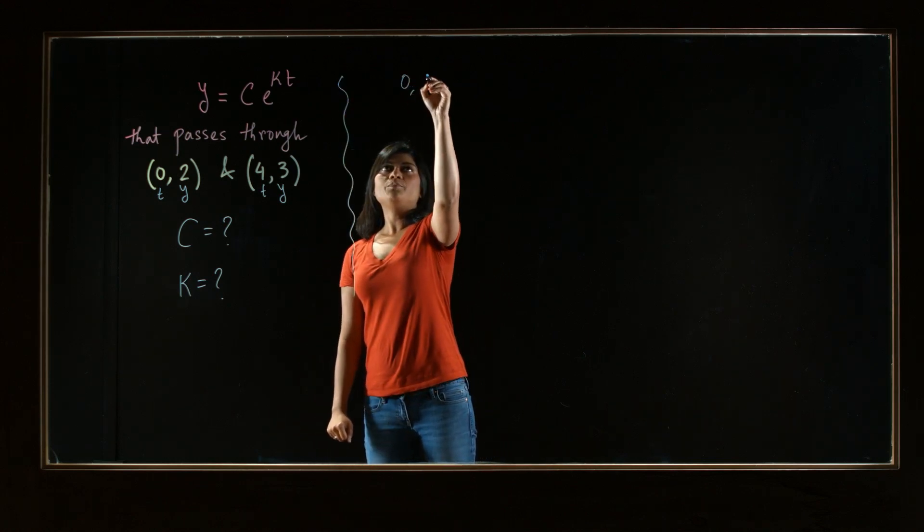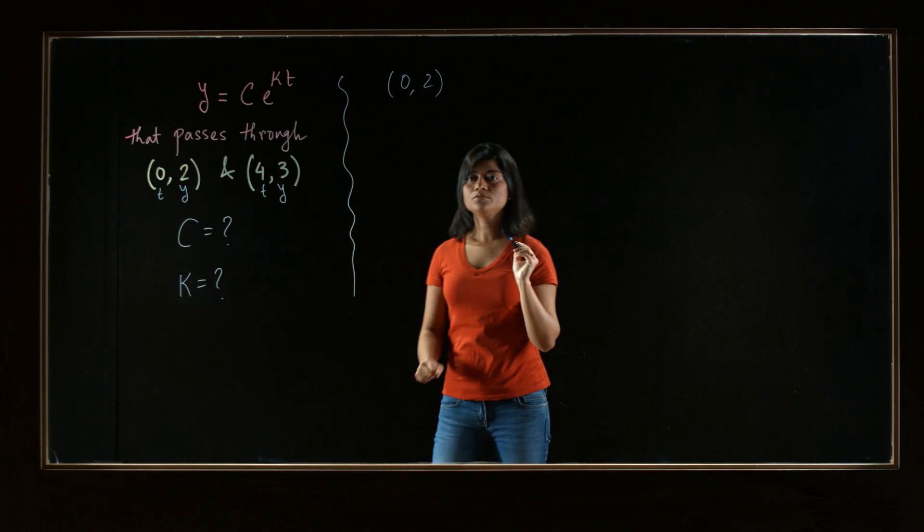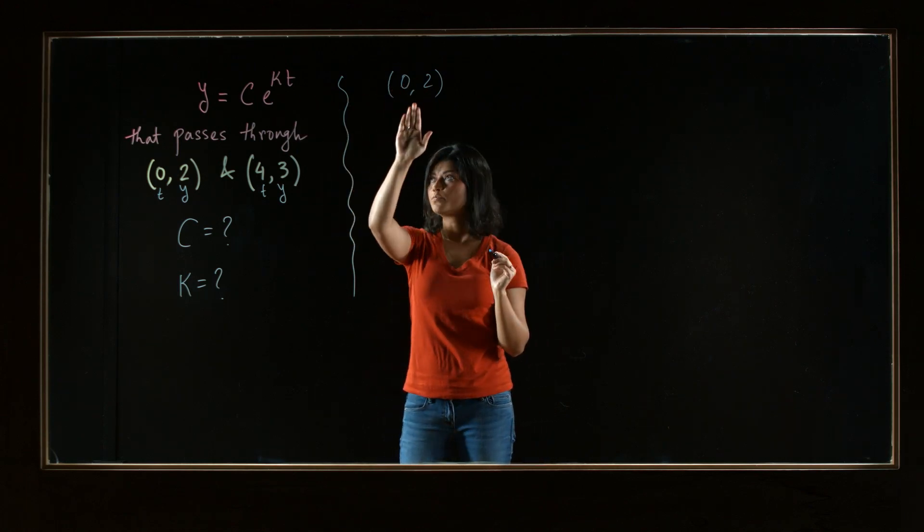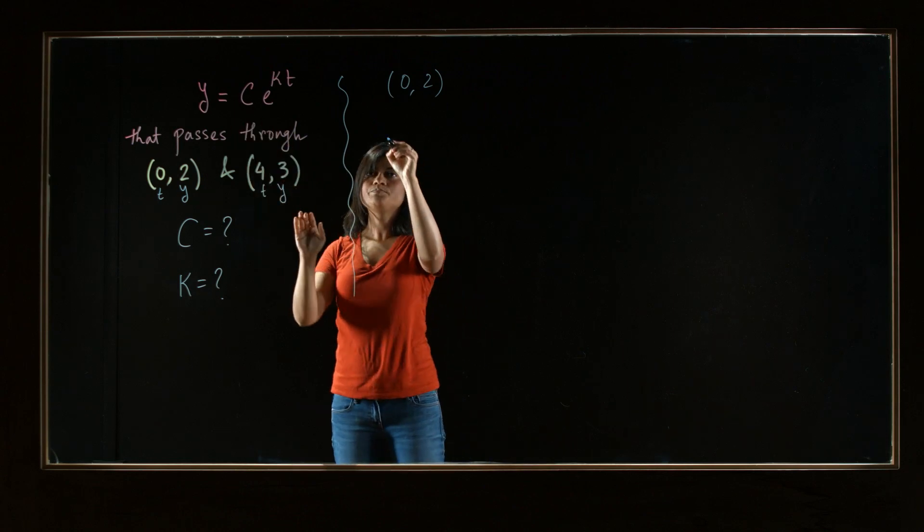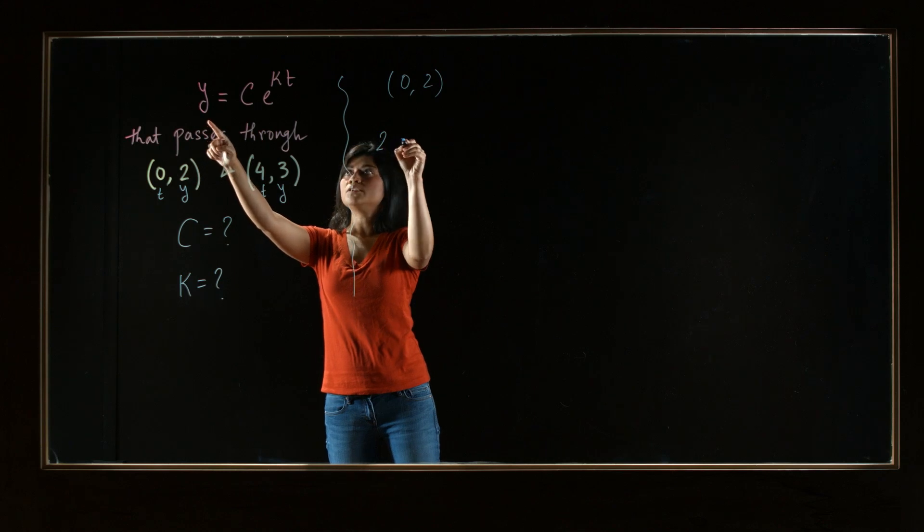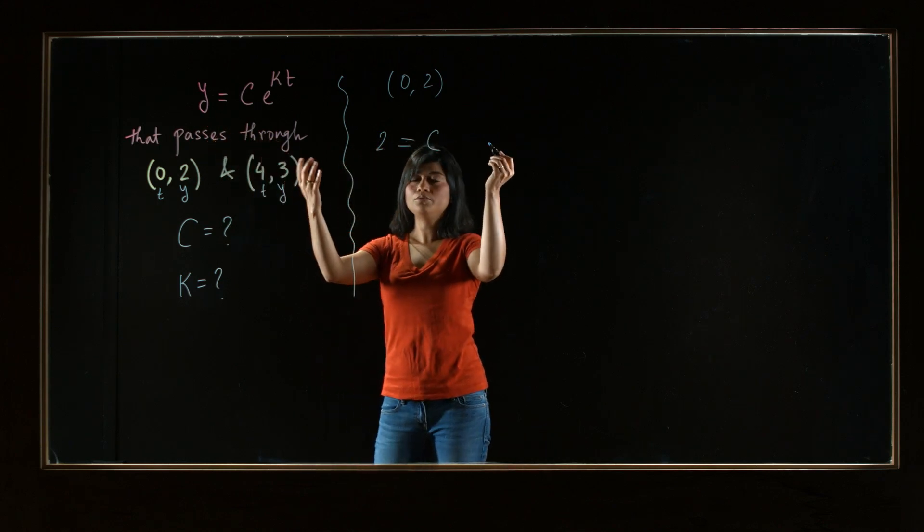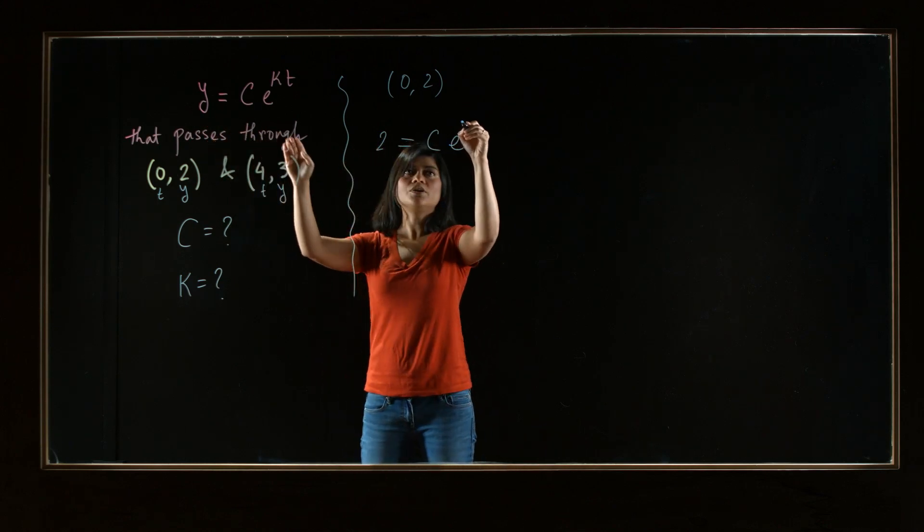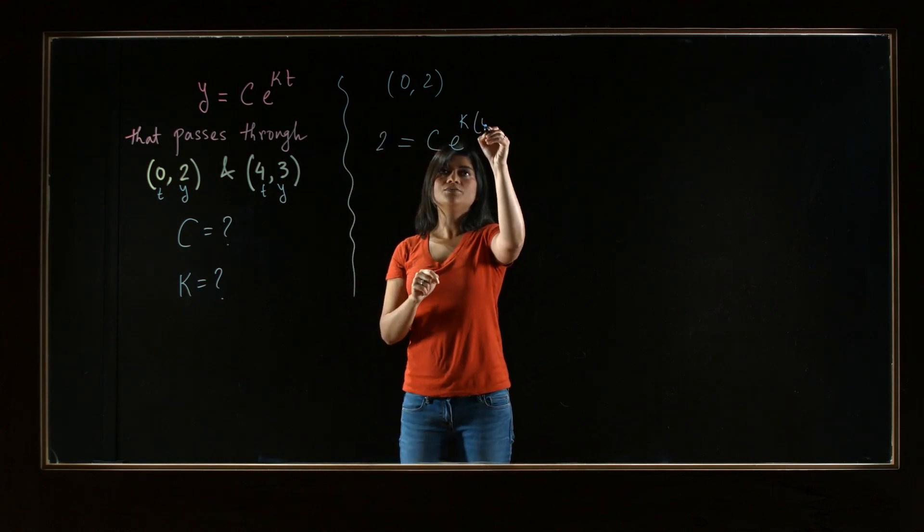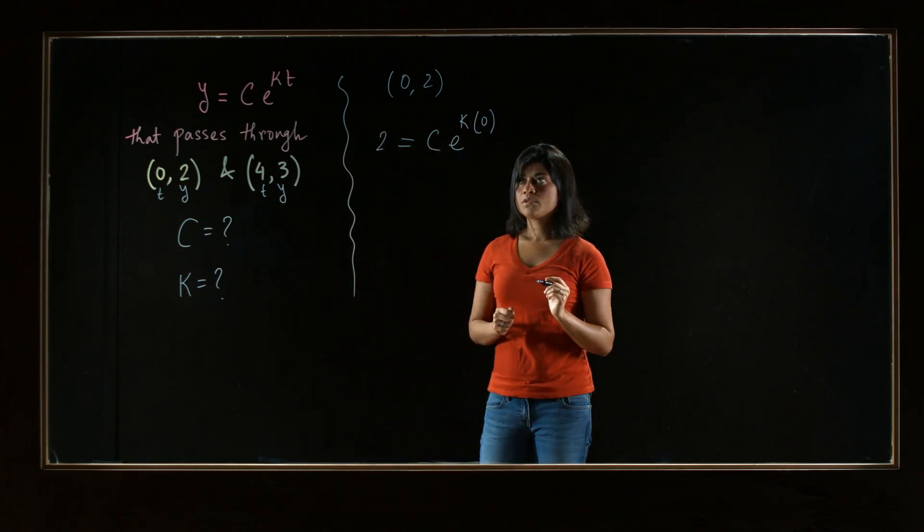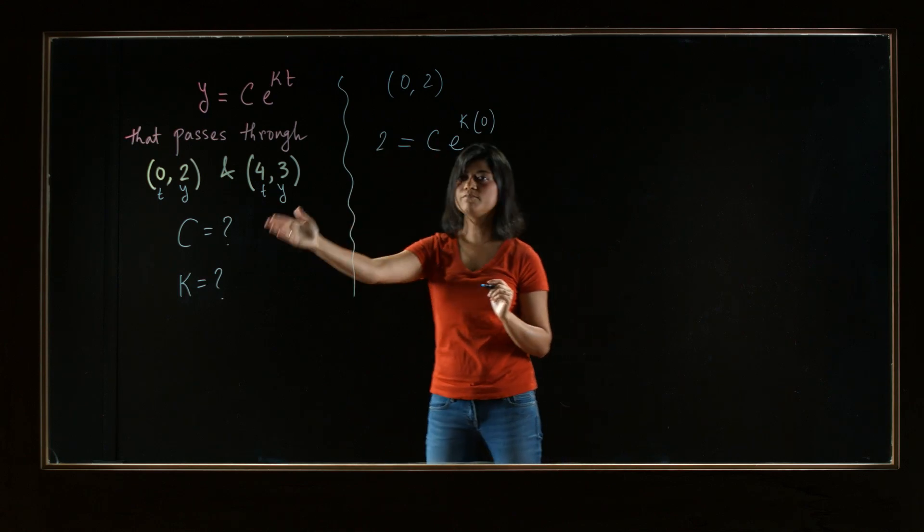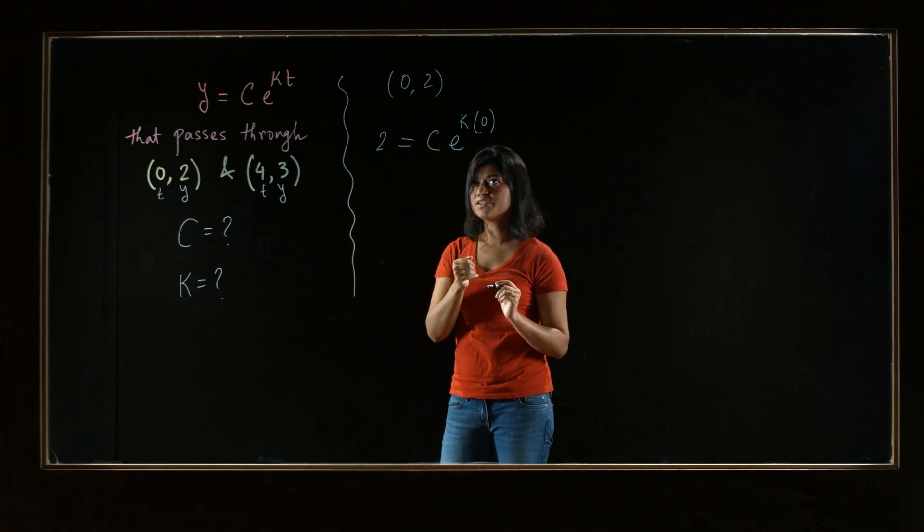So say we have the point 0 comma 2. And the function is passing through this point. So you plug that in. In the equation, it will be satisfied. So y is 2 is equal to c, we don't know, e to the power k, we also don't know, and plug in t value, 0. And now let's try to solve and see if we can figure out one of these constants from this equation.